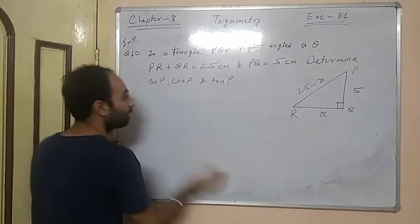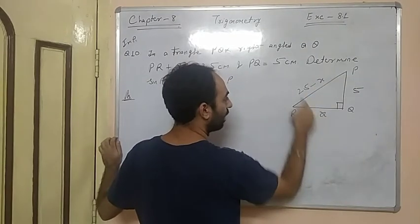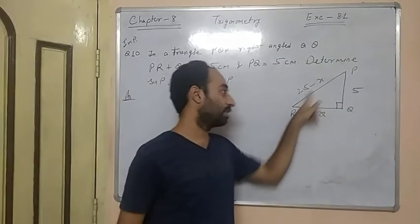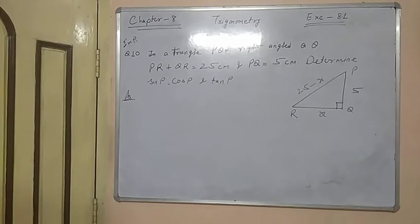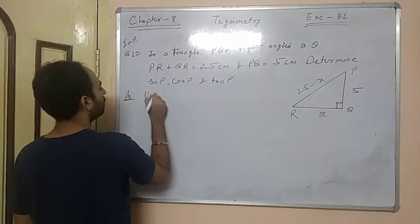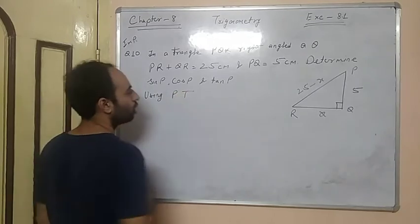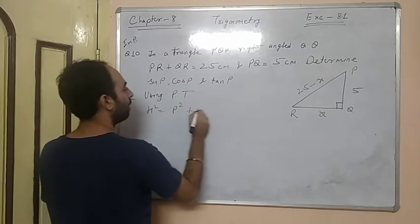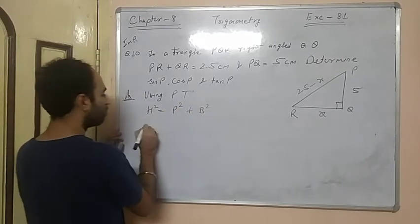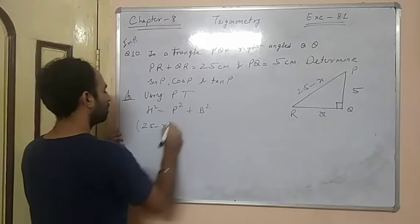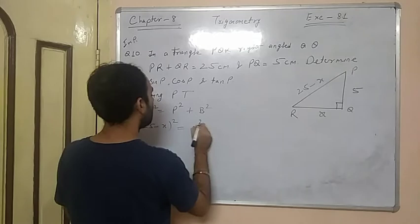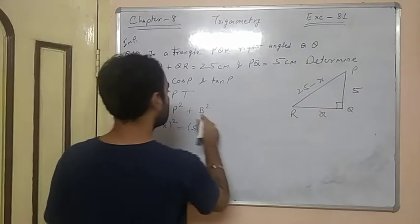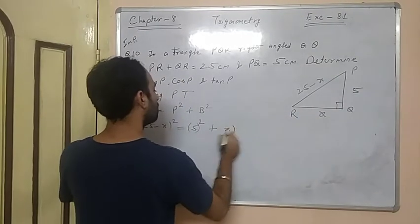Now we want the value of x, so we will use the Pythagorean theorem. We know that h² equals p² plus b². So the hypotenuse is PR, which is 25 minus x whole square, equals the perpendicular PQ which is 5, so 5² plus the base QR which is x².